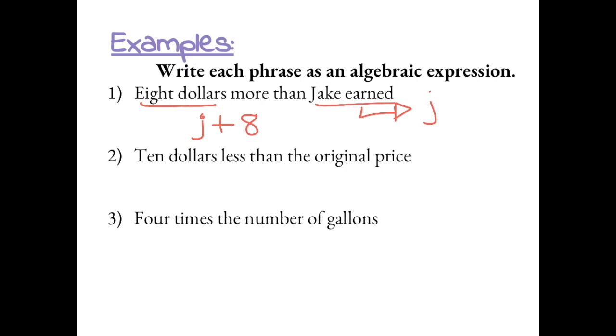Number 2, $10 less than the original price. Again, the unknown is the original price. So I'm going to define the variable and I'm going to label this as P for price.